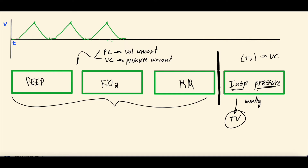The nice thing about pressure control is that the ventilator won't go above the inspiratory pressure you set. You're telling the ventilator: with every breath, I want you to give this pressure in millimeters of mercury, and that pressure creates a tidal volume. The tidal volume is patient-dependent — based on anatomy, physiology, and lung compliance. So the tidal volume is the uncontrolled variable, the result of the inspiratory pressure you set.